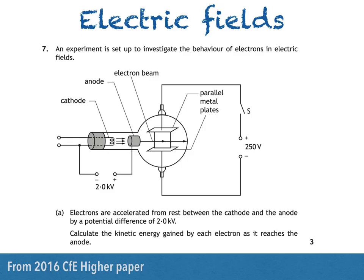Part A says electrons are accelerated from rest between the cathode and the anode by a potential difference of 2 kilovolts. We're asked to calculate the kinetic energy gained by each electron as it reaches the anode. Let's give ourselves space to calculate the answer.